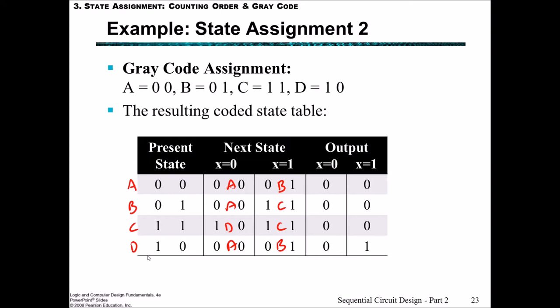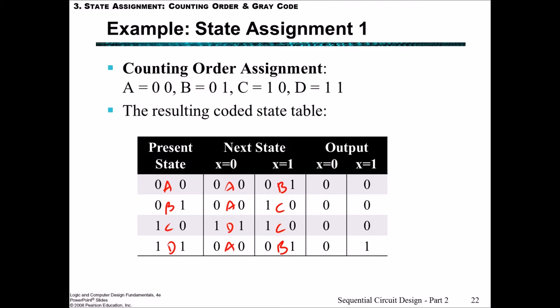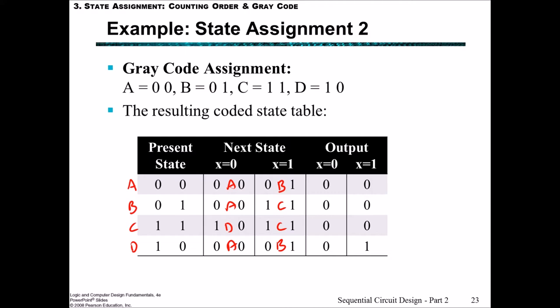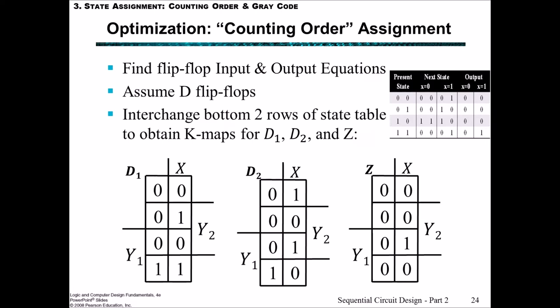Let's once again write out this state table based upon the initial letter-based state table. You can see how we've simply replaced the letter A, B, C and D with these binary values. Between the state assignment 1 where we use the counting order and state assignment 2 where we use the grey code order, there's a very slight difference in the coding of those symbols.